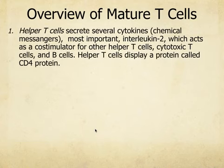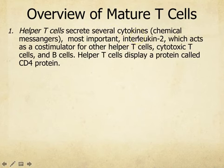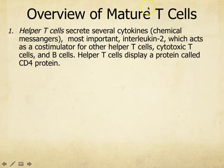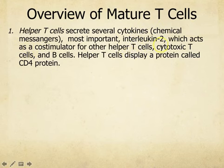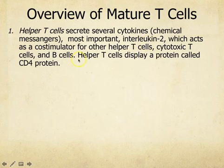We have two different types of T cells. Helper T cells are going to secrete cytokines — small proteins that act as chemical messengers. The one we're particularly concerned about is interleukin-2, because it acts as a co-stimulator for other helper T cells, cytotoxic T cells, and B cells. Helper T cells display a CD4 protein in their cell membrane.